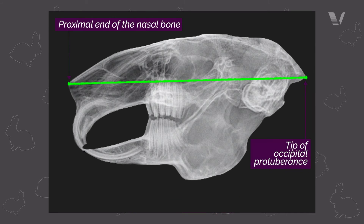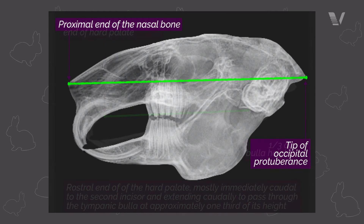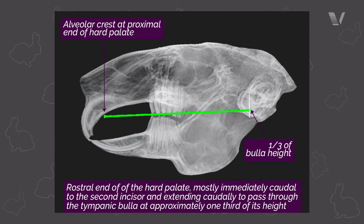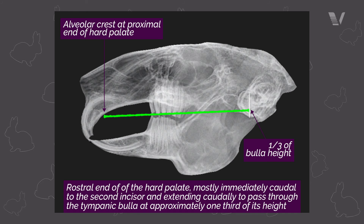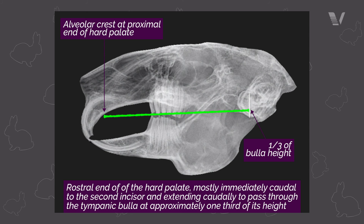Number one is going to be the proximal end of the nasal bone with the tip of the occipital protuberance. Number two is going to be the rostral end of the hard palate, mostly immediately caudal to the second incisor, extending caudally to pass through the tympanic bulla at approximately one-third of its height.